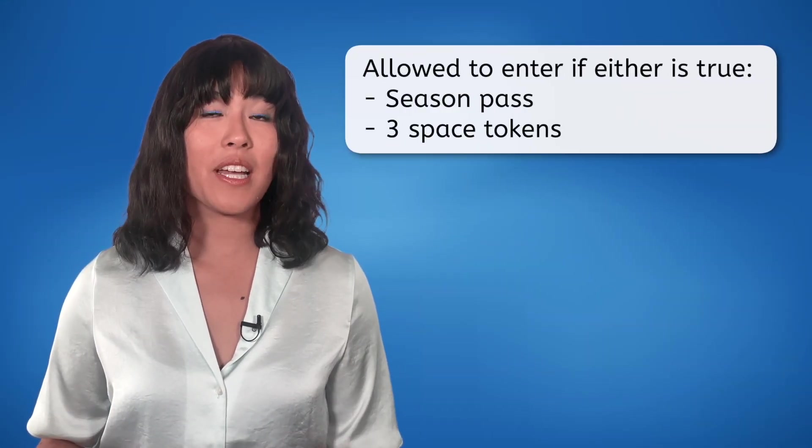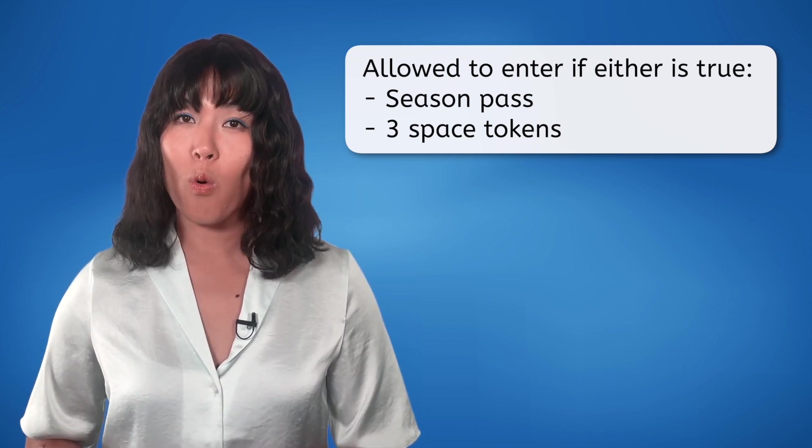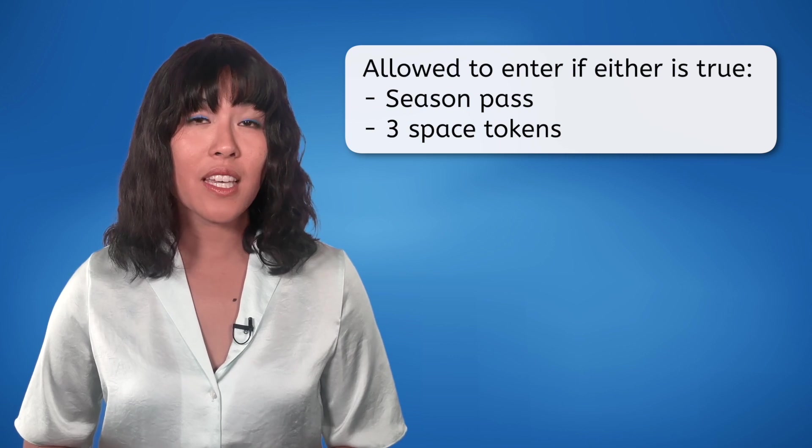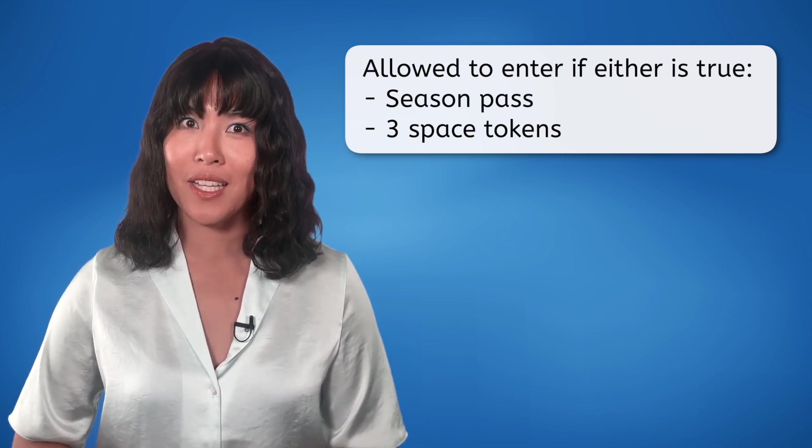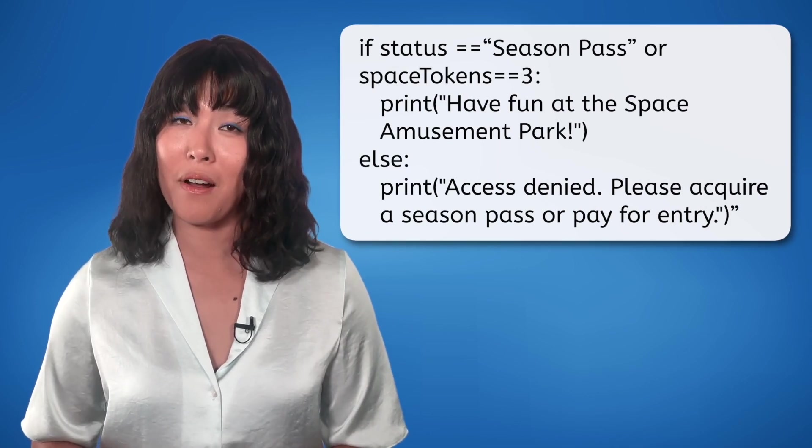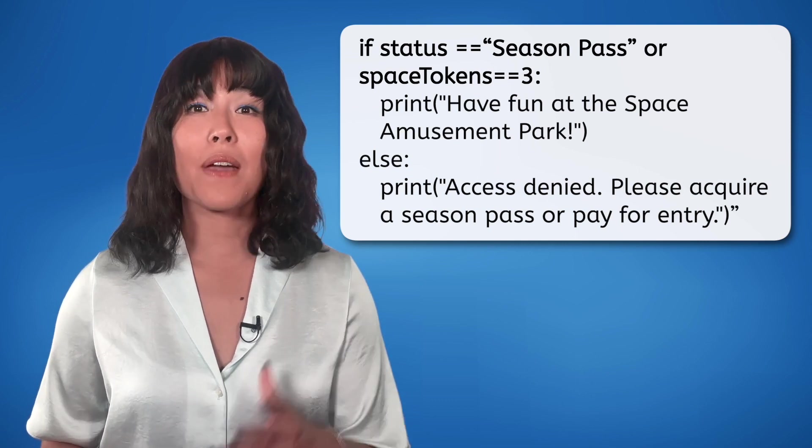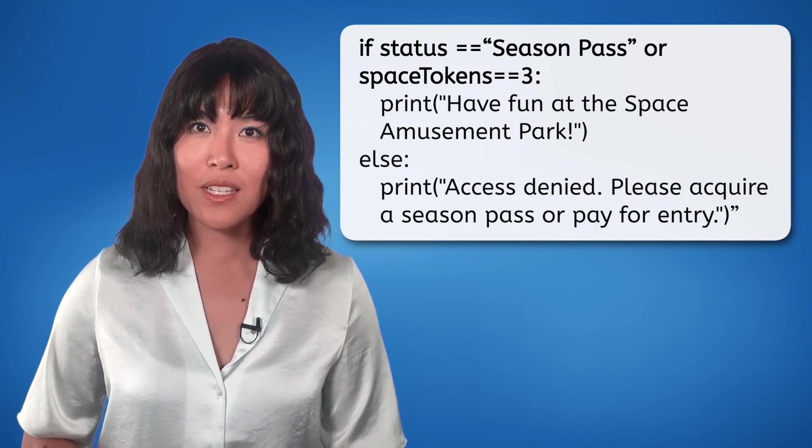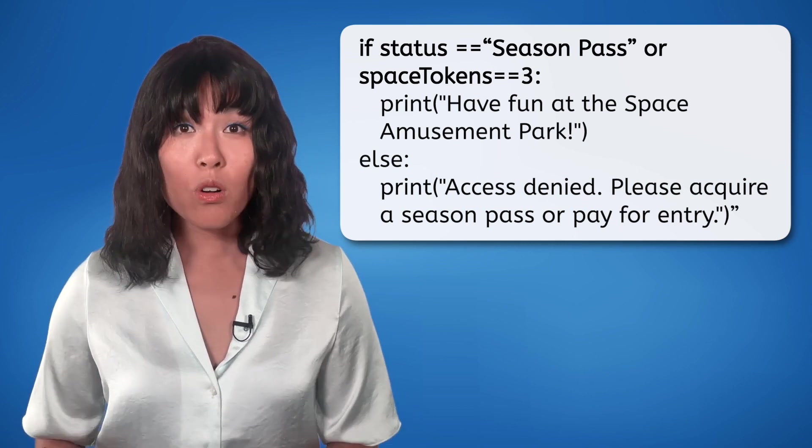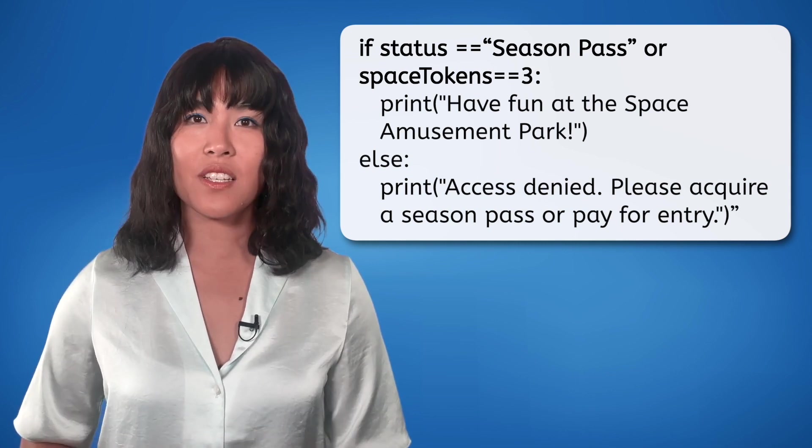At the Space Amusement Park, patrons gain entry either if their status is equal to season pass or if they pay the entry fee equal to three space tokens. In this example, a patron is allowed entry to the Space Amusement Park if they are either a season pass holder or they pay the entry fee of three space tokens. The OR operator facilitates entry when at least one of these conditions is true.